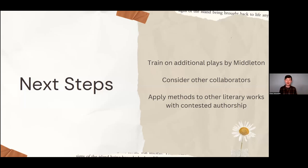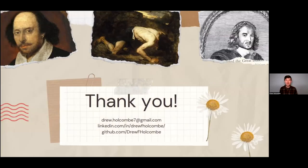Some next steps to help clarify the findings: training on additional Middletonian plays to pick up on more characteristic words — including A Mad World My Masters and Michaelmas Term, which I was unable to obtain in a usable format. I'd also look into other proposed collaborators such as George Chapman, and investigate if those have any merit. I'd also be interested in applying this same process to other works with contested authorship, providing suggestions for where historians and literary scholars can investigate more closely.